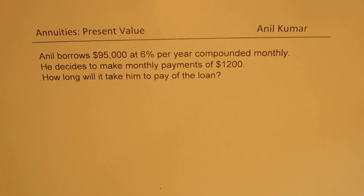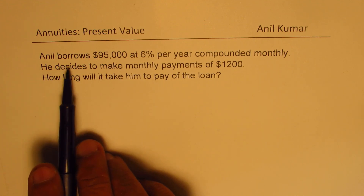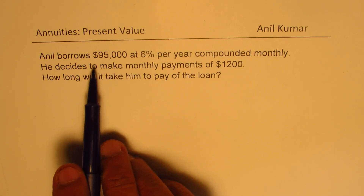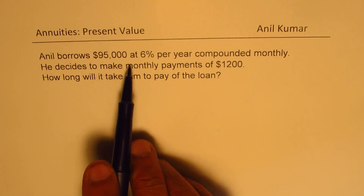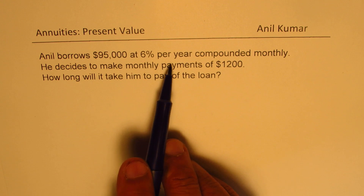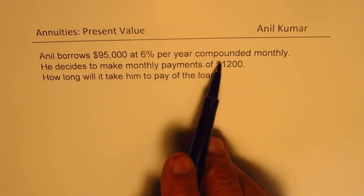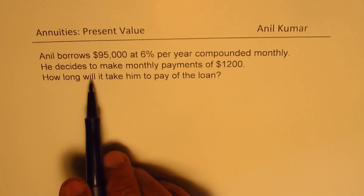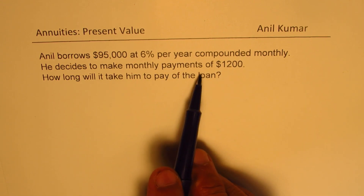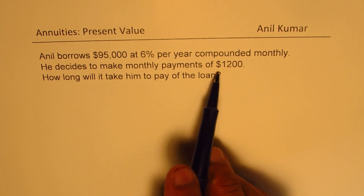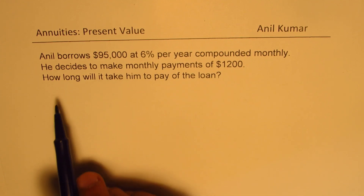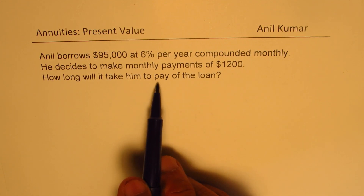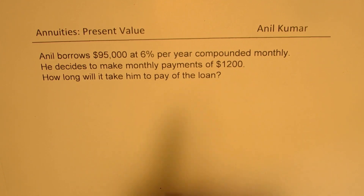The question here is: Anil borrows $95,000 at 6% per year compounded monthly. He decides to make a monthly payment of $1,200. How long will it take him to pay off the loan?